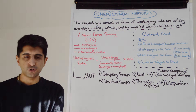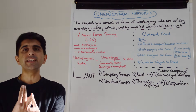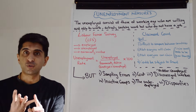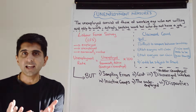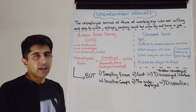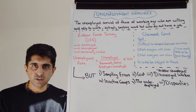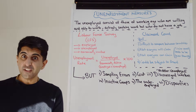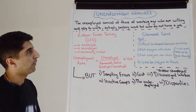Part two: you've got to be willing and able to work. Part three: actively seeking work. And then part four: without a job. That's our definition of unemployment — quite technical, quite difficult to be unemployed.